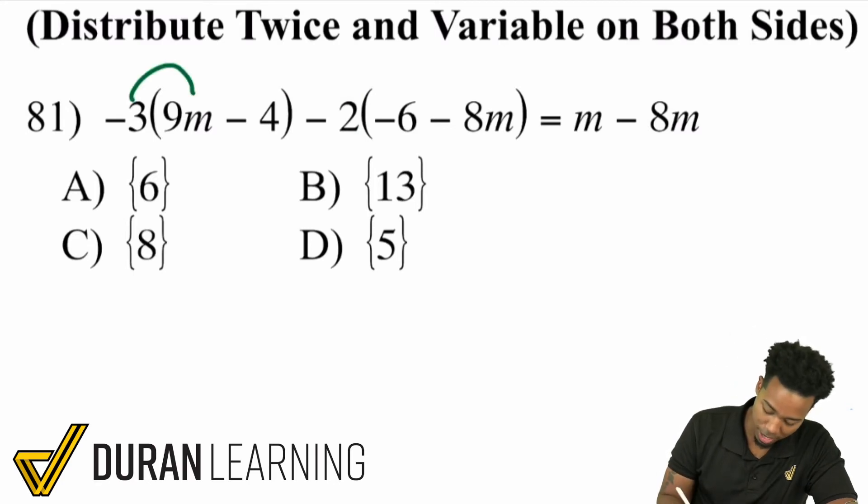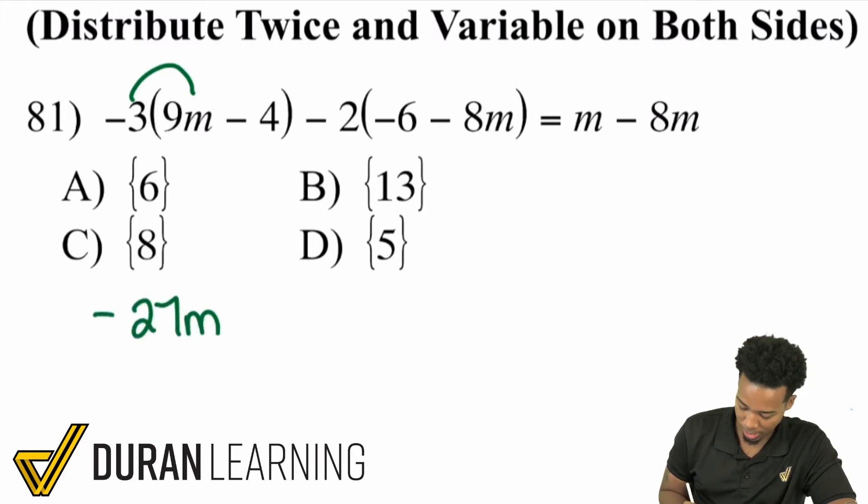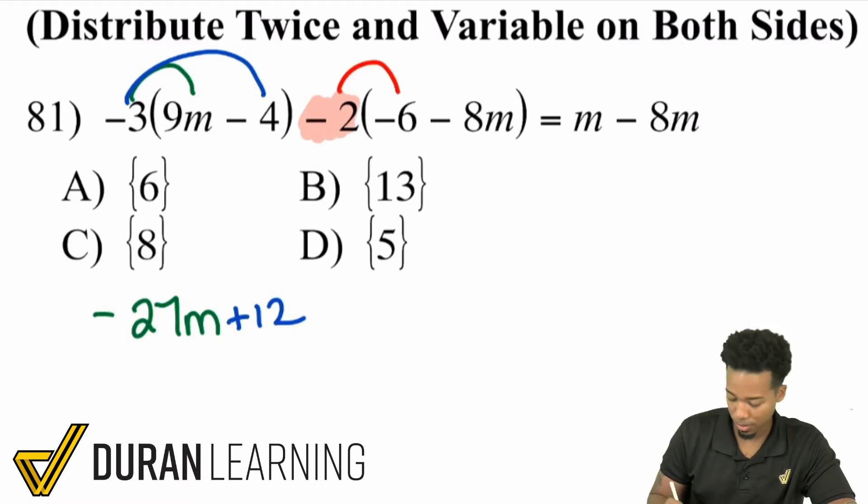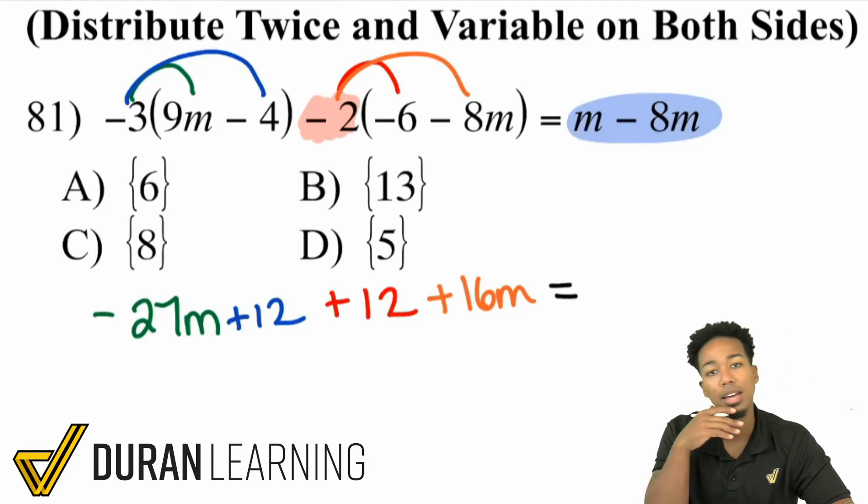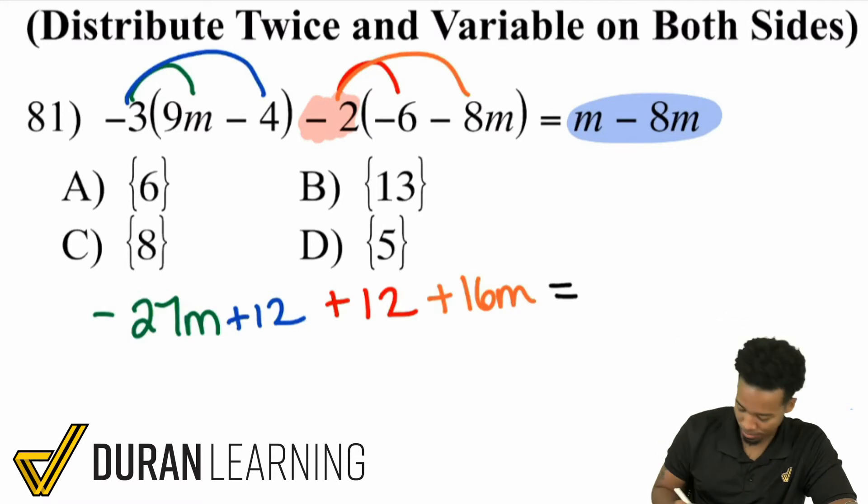So let's get to work. We have negative three times positive nine m, negative three times nine is negative 27m. Next up, negative three times negative four is positive 12. Remember, we are distributing the entirety of that negative two. So negative two times negative six is positive 12. Then negative two times negative eight m, positive 16m. Notice how I'm taking it nice and slow here. Over here, we can combine those two terms because they are like terms. m minus eight m or one minus eight is negative seven, so we'll have negative 7m on the right side.